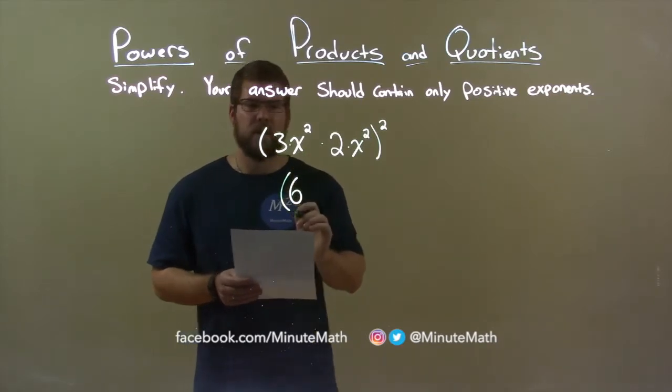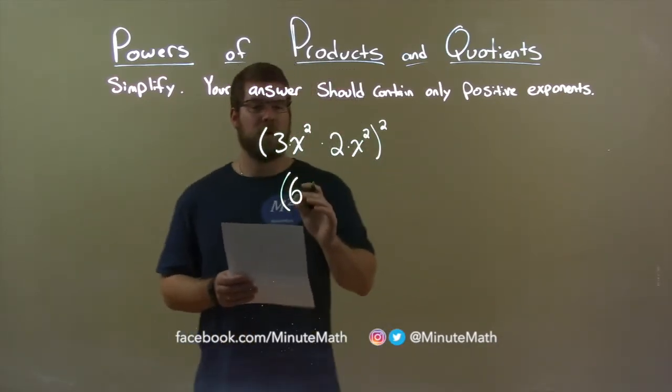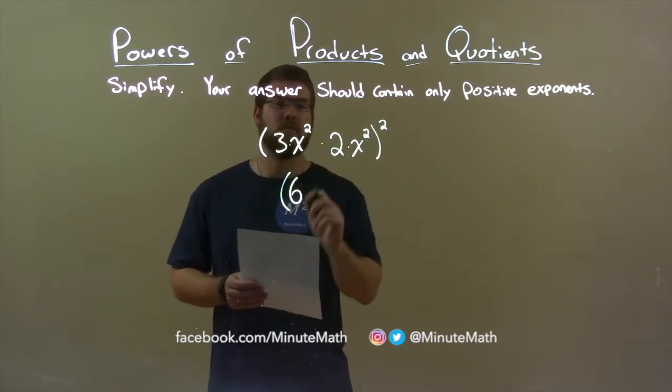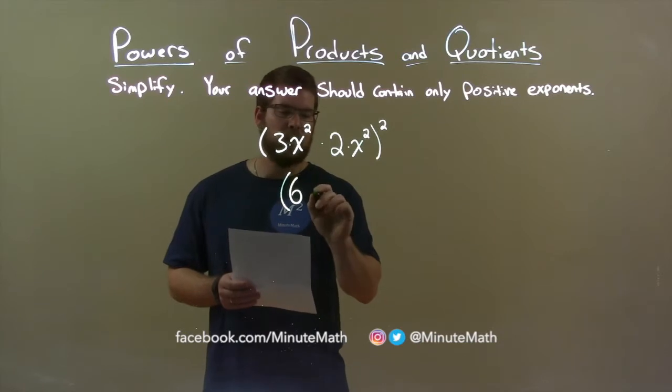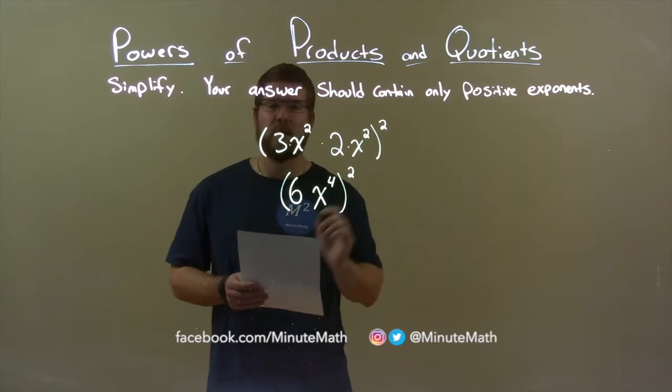And, we have the x's now. We have x squared times x squared. When we're multiplying variables with the same base, we add the exponents. 2 plus 2 is 4. So, we have x to the fourth power here, and it's all raised to the second power.